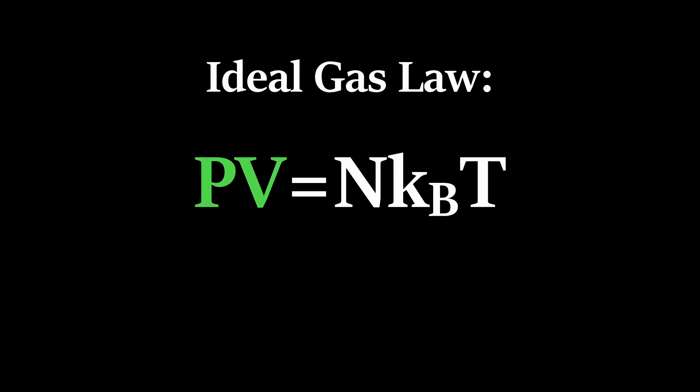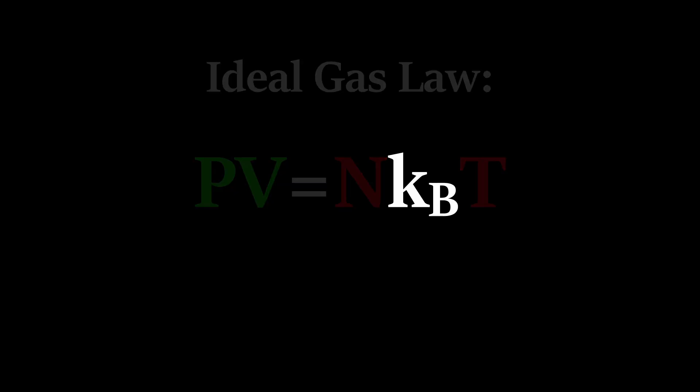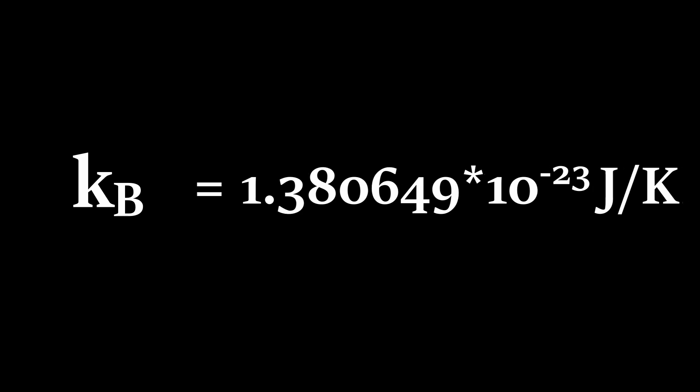The Boltzmann constant is one of the fundamental constants of our universe. It relates the thermal energy of particles in a gas to the temperature of the gas and therefore plays a crucial role in thermodynamics. Today it stands at a value of 1.380649 × 10⁻²³ joules per kelvin.